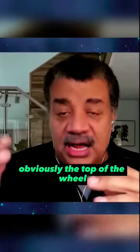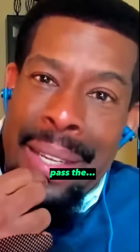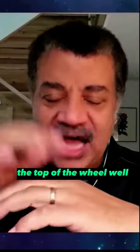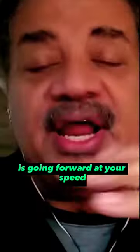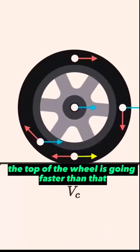Notice if the chassis of the car is moving at the speed of the car, obviously the top of the wheel is moving faster than the chassis, right? It's moving past the chassis, past the top of the wheel well. The wheel well is going forward at your speedometer speed. The top of the wheel is going faster than that.